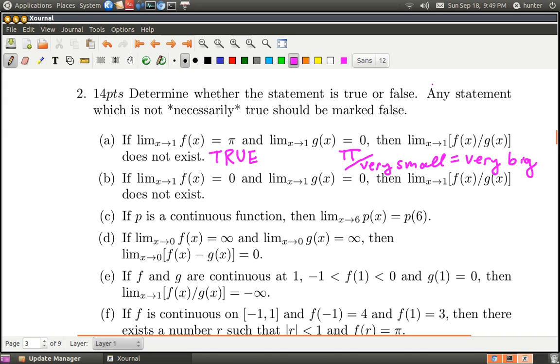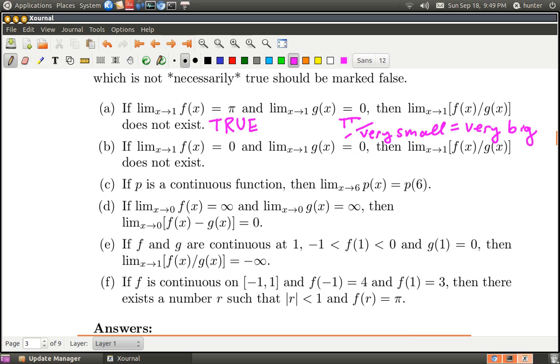There's a tiny subtlety here because we don't know if g(x) is a very small positive or negative number, so it's either going to be very big negative or positive. But it doesn't matter because either way it's not going to be any fixed finite number—it will exceed all numbers in magnitude. So it does not exist. That's why the answer to A is true.